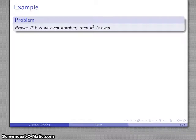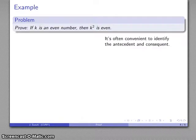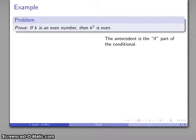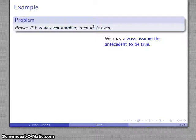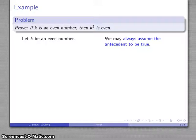Well, let's take a look at an actual example here. So let's take a look at the example if k is an even number, then k squared is even. It's often convenient to identify the antecedent and consequent because that tells us where we start, that's our antecedent, and where we want to end up, that's our consequent. So the antecedent is the if part of the conditional. k is an even number. And we may always assume that the antecedent is true. So let k be an even number.